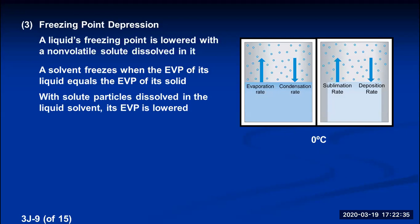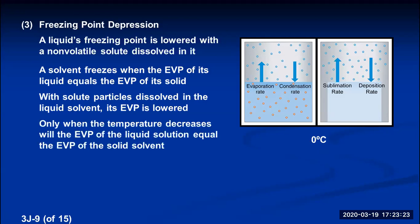With solute particles dissolved in the water, the equilibrium vapor pressure of the liquid is lowered. The solute particles block spots on the surface and decrease the rate of evaporation. So condensation happens at a faster rate, less vapor remains, and the vapor pressure is lower. If the vapor pressure is less than that of the solid, then at zero degrees, this solution is not at its freezing point. Only when the temperature decreases can the equilibrium vapor pressure of the liquid again equal the equilibrium vapor pressure of the solid.